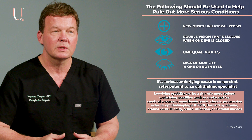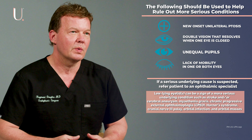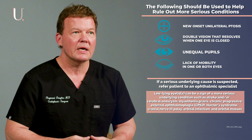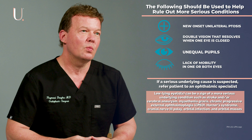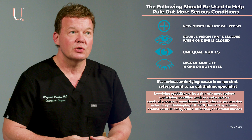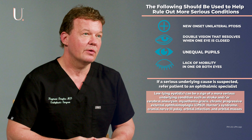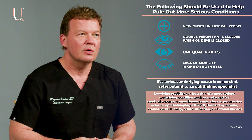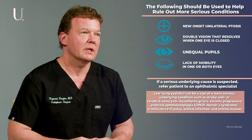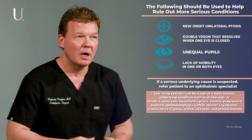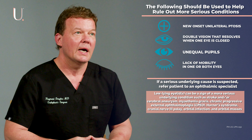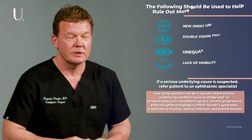Additional signs include unequal pupils, double vision that resolves when one eye is closed, and a lack of mobility in one or both eyes. If an eye is turned outward, they might have a third nerve palsy. These are neurological issues that are more emergent, and while uncommon, you should always refer these patients out to an ophthalmic specialist.